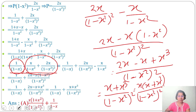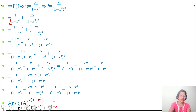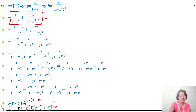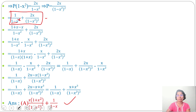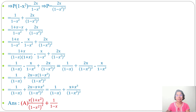This matches option A: x(1+x²)/(1-x²)² + 1/(1-x). We obtained this by full simplification. Option C looks similar but has (1-x) instead of (1-x²)², so it might seem correct but that could be a printing mistake. When we simplify properly, option A is the correct answer. If this lecture was helpful, please like, share, and subscribe. Thank you.